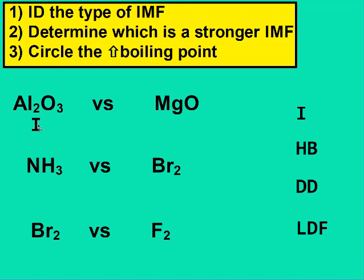For the first one, aluminum is a metal, so we have a metal and a nonmetal — that's ionic. MgO, we have a metal and a nonmetal — so that's also ionic. Since they're both ionic, we look at the charges. Aluminum is 3+, oxygen is 2−, magnesium is 2+, oxygen is 2−. That gives us six versus four. Six is larger than four, so aluminum oxide must have the stronger IMF, and if it has the stronger IMF, it takes more energy to boil it, so it has the higher boiling point.